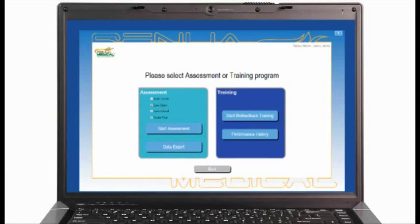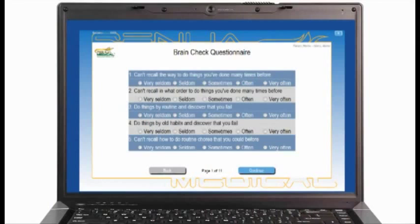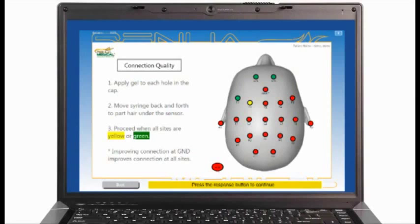You see there are four tests on the screen under the assessment side: Brain check, eyes open, eyes closed, and evoke task for the evoke potentials. Press the start assessment button. The instructions on the screen are for the patient to follow. Then you'll see the impedance or the connectivity of how well you have a connection between the scalp and the sensor.